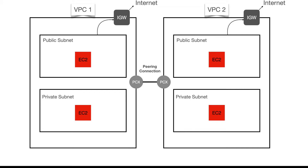The peering connection will be created in VPC1 as the requester, and the acceptor will be VPC2. VPC1 and VPC2 can be in different accounts or different regions — peering can be done across those VPCs. For simplicity, I have both VPCs in my account and same region, but be aware that cross-account and cross-region peering is possible.